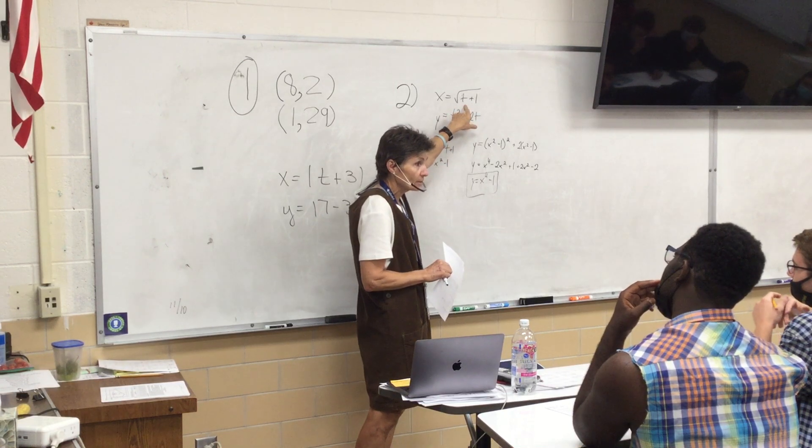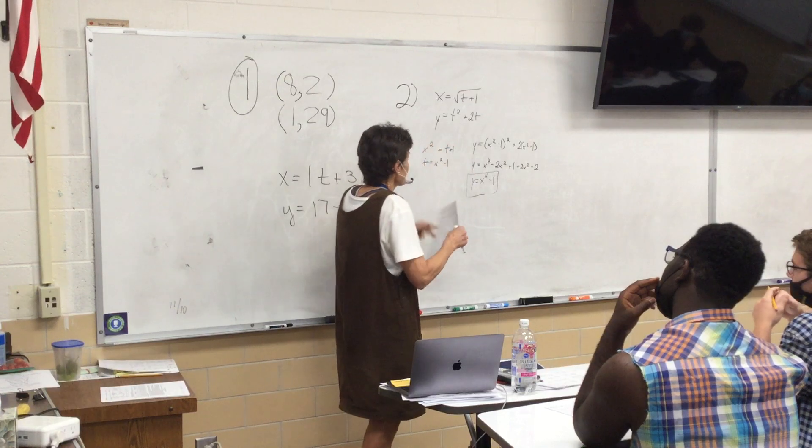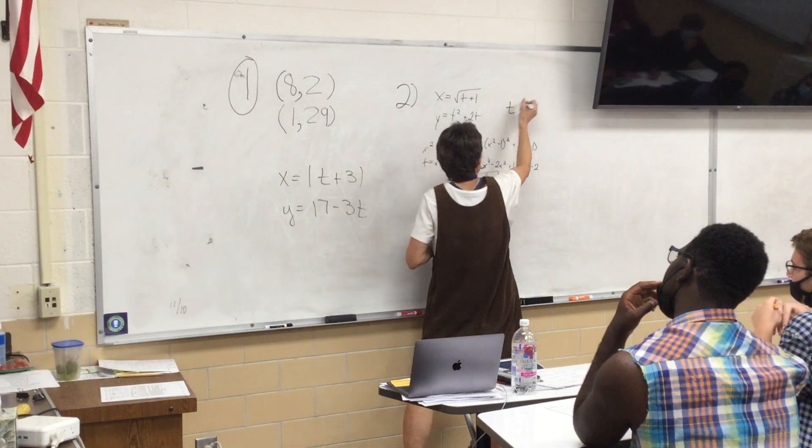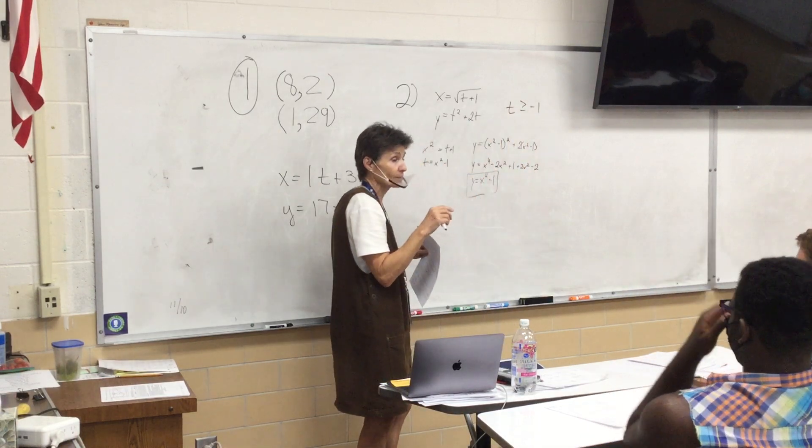This is a little bit different. Would you agree? I can't really use any T value that I want. Because why? What's going to happen right there? We're going to have an issue, aren't we? So, we're going to have to understand that for this system of parametric equations, T has to be bigger than or equal to negative 1. Would you agree with that?